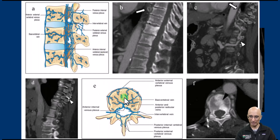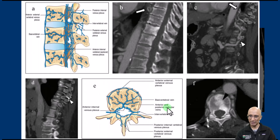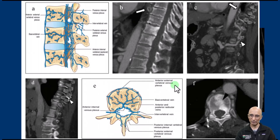This diagrammatic image shows the various collateral systems within the vertebral venous plexus. We have the anterior external vertebral venous plexus and the basivertebral venous system, joined by the anterior and posterior radicular veins. Within the spinal canal we have the anterior and posterior internal vertebral venous plexus. We also have the posterior external vertebral venous plexus along the lamina and spinous processes. In summary, there are four collateral systems: anterior and posterior external, and anterior and posterior internal vertebral venous plexus.